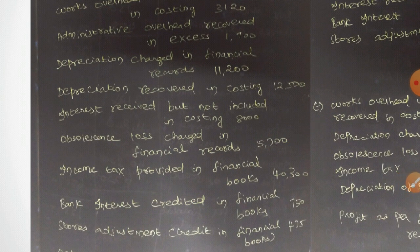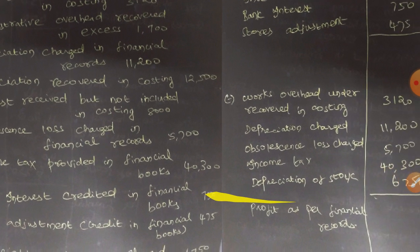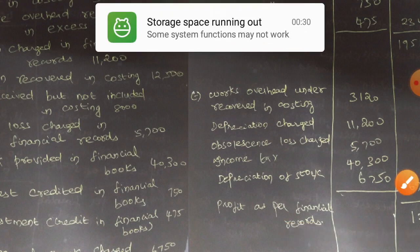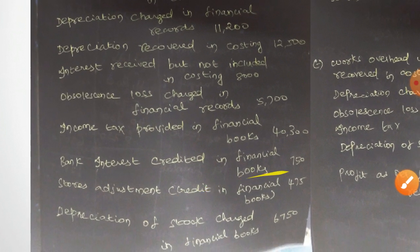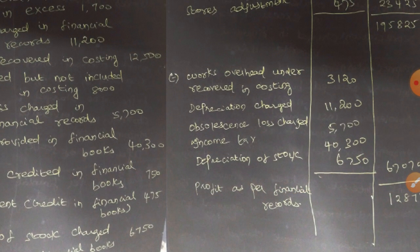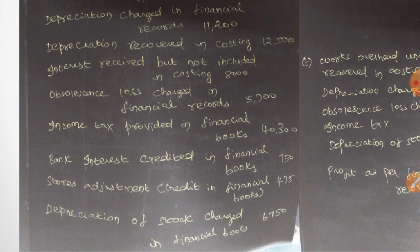Next is obsolescence loss charged in financial records: 5,700. Loss charged is an expenditure, so it is deducted and shown as a negative value. Then income tax provided in financial books: 40,300 — income tax is also an expenditure, so this is also deducted.